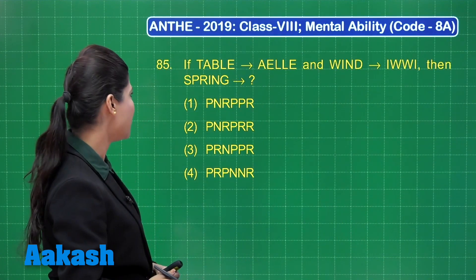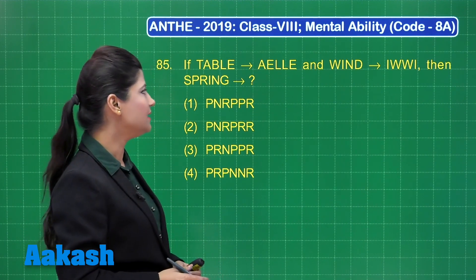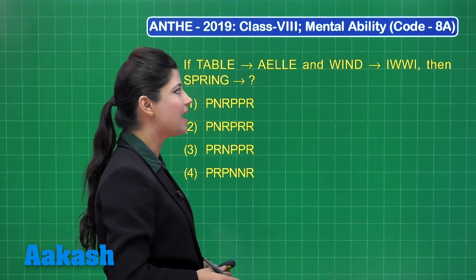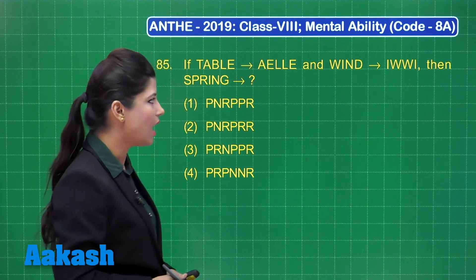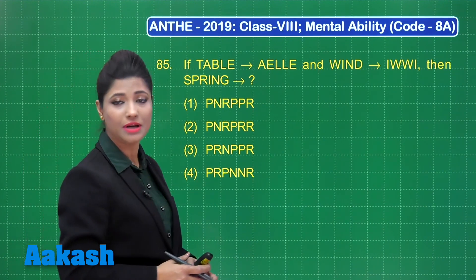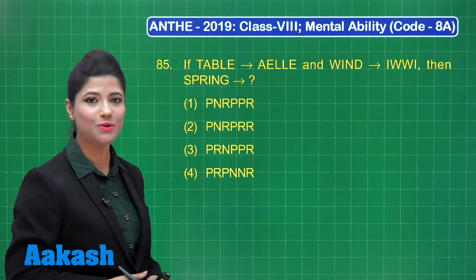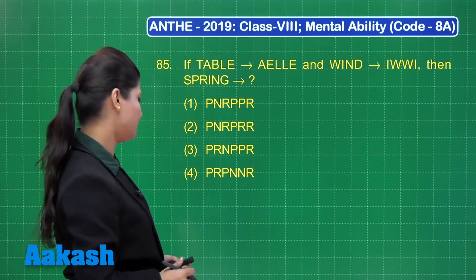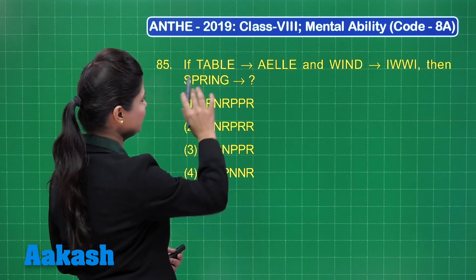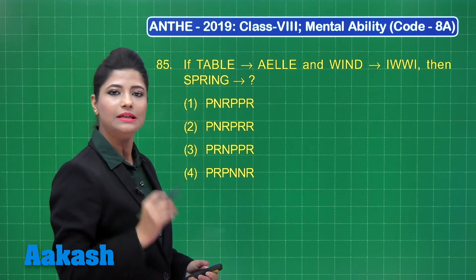The next question states that if 'table' can be written as A, E, L, L, E and 'wind' can be written as I, W, W, I, then how would you write 'spring'? This is an interesting coding-decoding question. In this case, table is written as A, E, L, L, E.